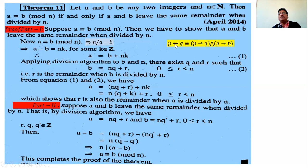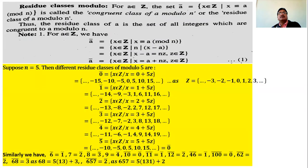This completes part two, and thus the full proof of the if-and-only-if theorem. In the next lecture, we will see the definition of residue class modulo n and some examples on that.